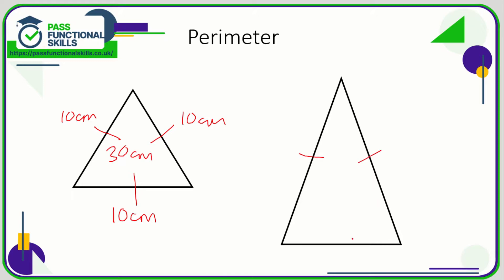This triangle is an isosceles triangle. They might tell you it's isosceles, or indicate it by putting dashes on the equal sides. If they label one side as 12 centimeters and another as eight centimeters, on an isosceles triangle the two marked sides are the same, so this side is also going to be 12. So 12 plus 8 plus 12 gives a perimeter of 32 centimeters.